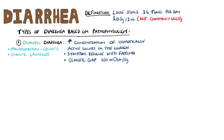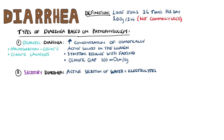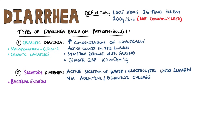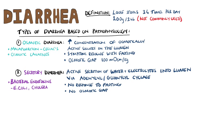Next is secretory diarrhea, where we have active secretion of water and electrolytes into the lumen via activation of adenylyl or guanylyl cyclase. Usually, this type is caused by bacterial endotoxins, such as with E. coli and cholera. Here, there is no response to fasting and no osmotic gap.